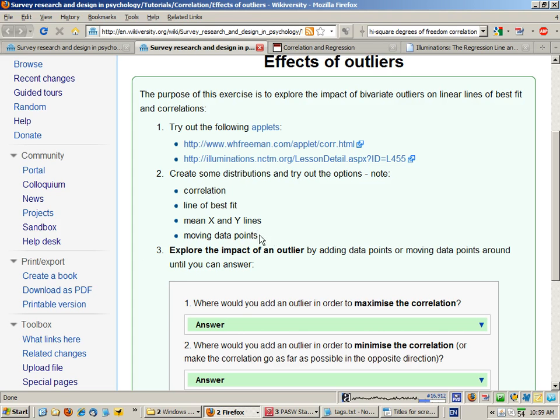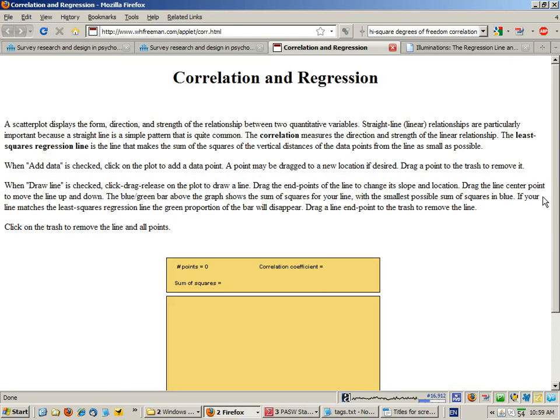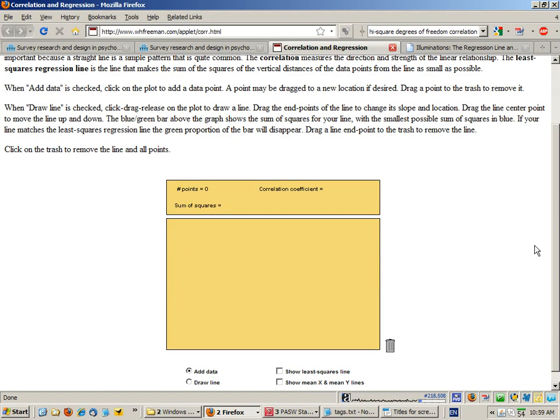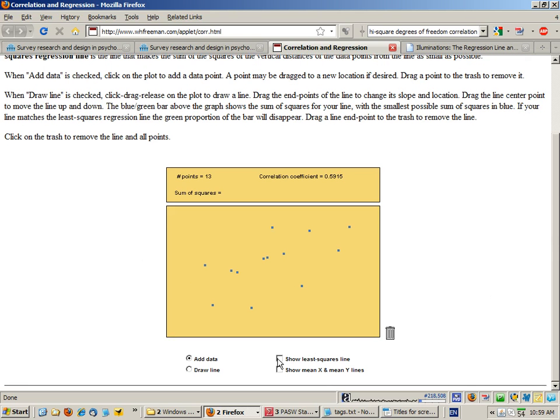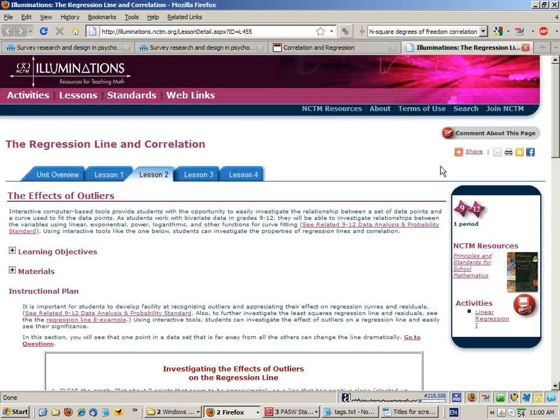In this case, I'm on the add data option so I can add data points. As I'm doing that I can see the correlation up here. I can show the least squares line, the line of best fit, and I can show the X and Y mean lines.